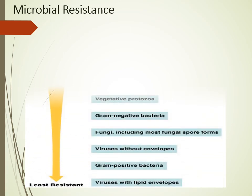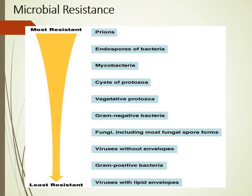This picture shows the resistance of microorganisms against commonly used sterilization or disinfectant agents. Prions are the most resistant, followed in decreasing order by: bacterial endospores, mycobacteria, protozoan cysts, vegetative protozoa, gram-negative bacteria, fungi, non-enveloped viruses, and finally enveloped viruses, which are the least resistant against disinfectants or sterilants.